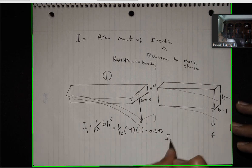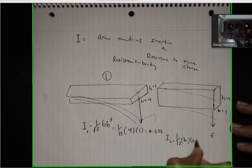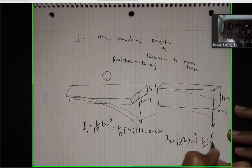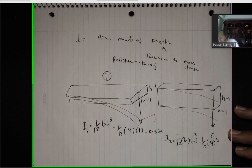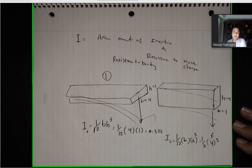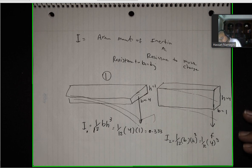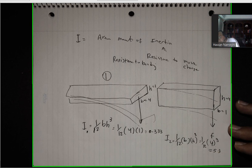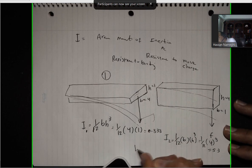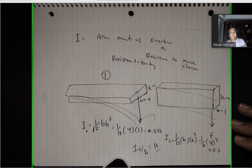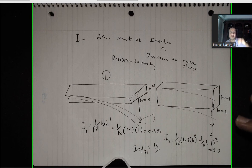In scenario 2, I₂ is equal to 1/12 bh cubed — 1/12 times 1 times 4 to the power of 3. So 4 to the power of 3 is 64, divided by 12, I got 5.3. So if you divide 5.3 by 0.333, it's almost 18 times more. So I₂ divided by I₁, I got 18. You see — 18 times the resistance to bending. That's why the ruler, nothing happened to it once I changed its orientation, but the other way the ruler was about to break.